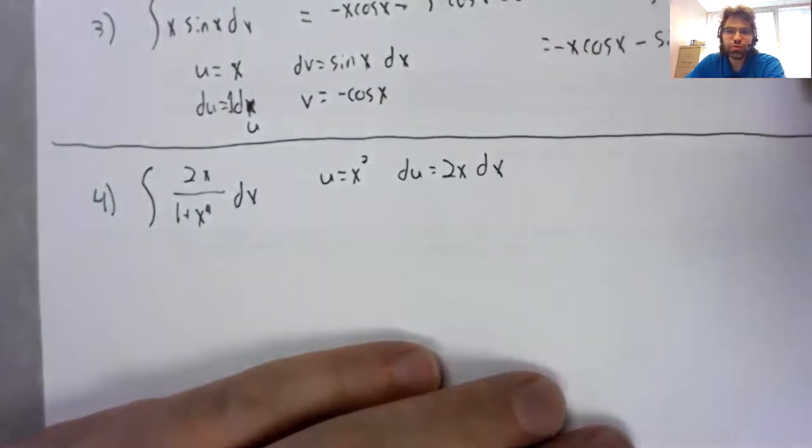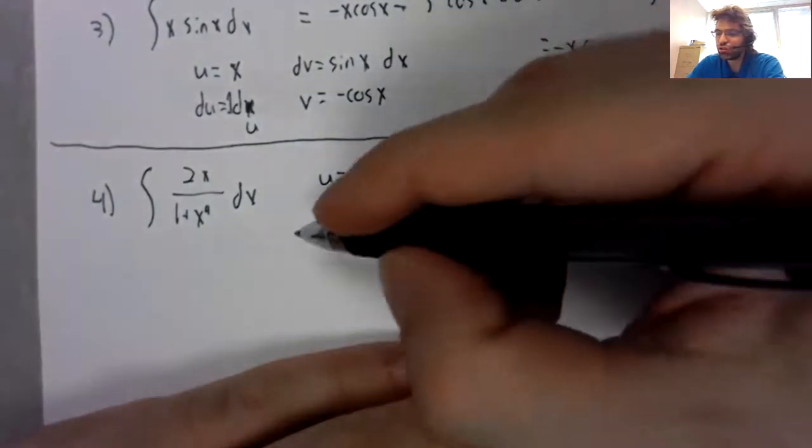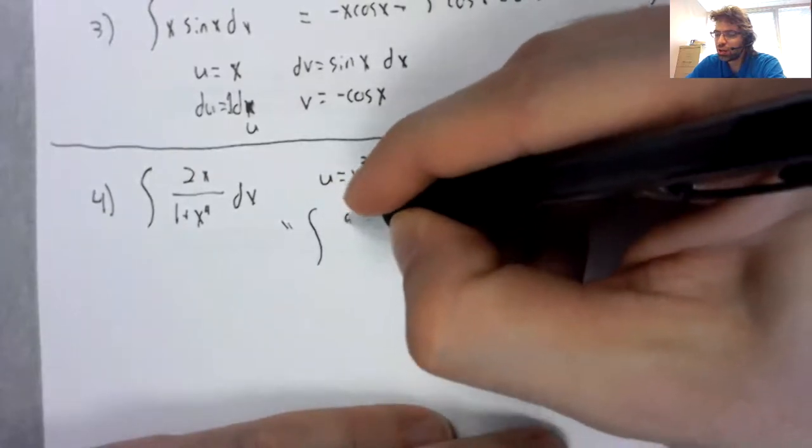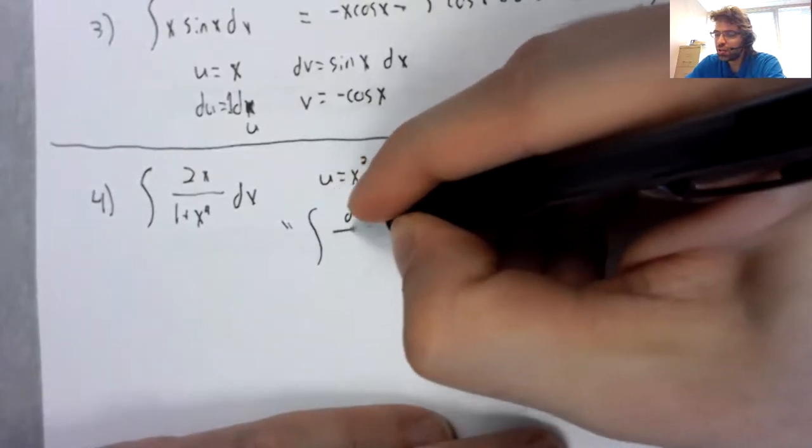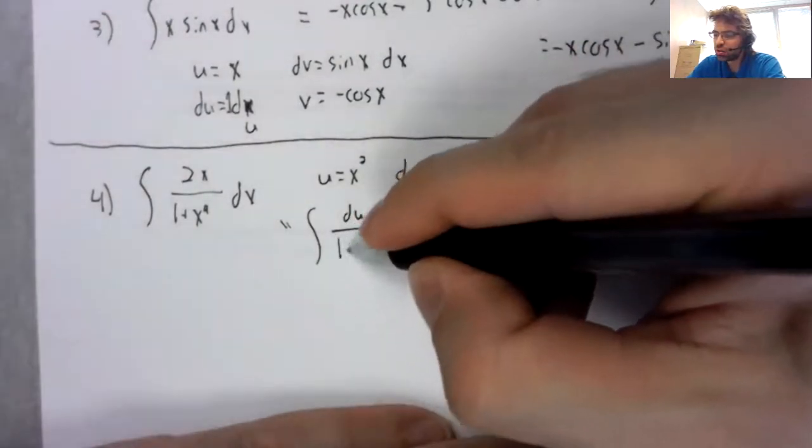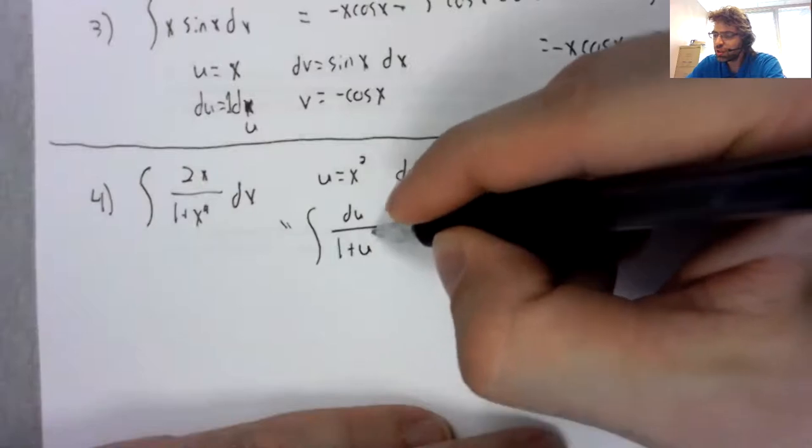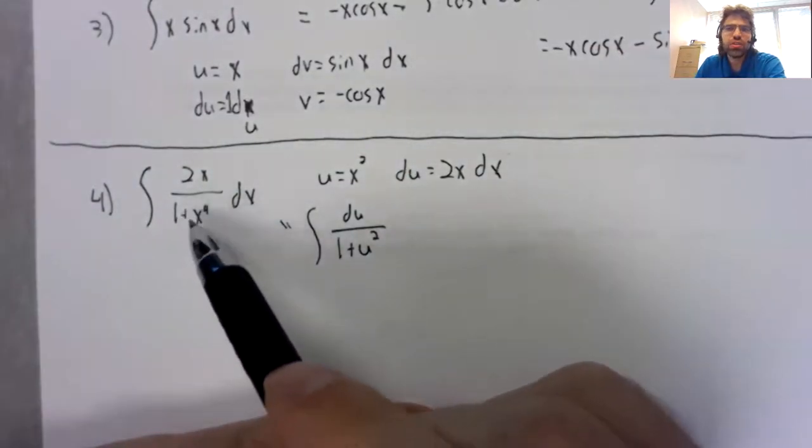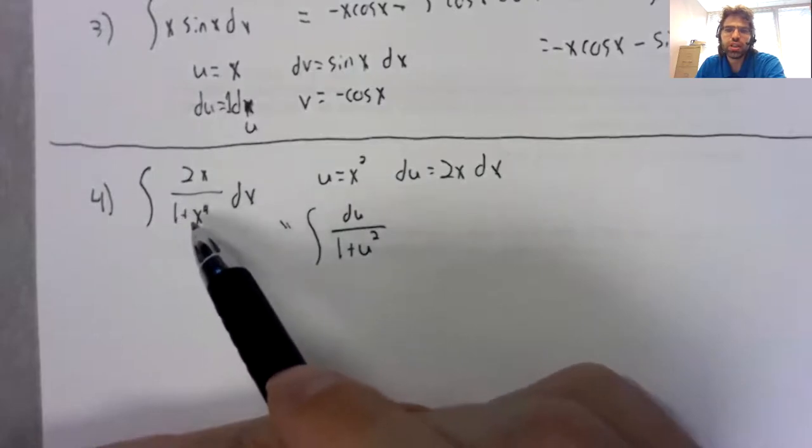that 'once you recognize the trick' can conceal a lot of effort and false starts. We look at this and see it looks a little like the arctangent,